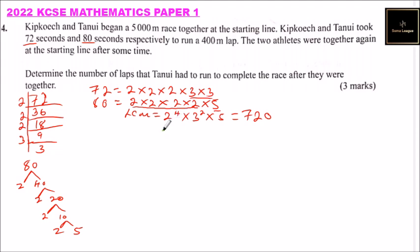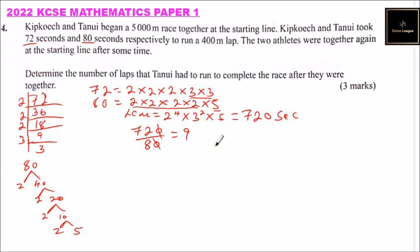So that is the lowest common multiple. You find out that since Tanui was using 80 seconds — so these are seconds — then you get 720 divided by 80, which is equal to 9. So 9 laps means by the time they were together at the starting point, Tanui had run 9 laps.